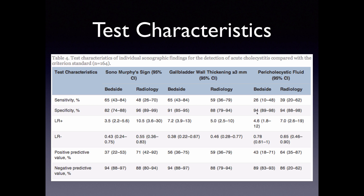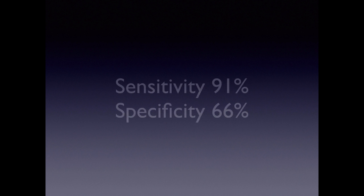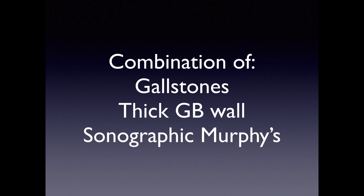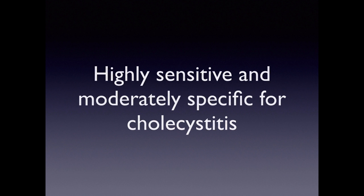A study from 2001 with 109 patients found similar performance: sensitivity of 91% and specificity of 66% for cholecystitis. For gallstones, the sensitivity was 96% and specificity was 88% — again, pretty good performance by emergency physicians. The combination of gallstones, thickened gallbladder wall, and sonographic Murphy sign are highly sensitive and moderately specific for cholecystitis.